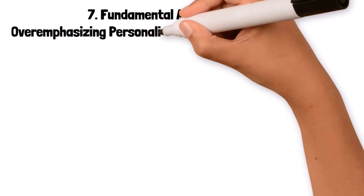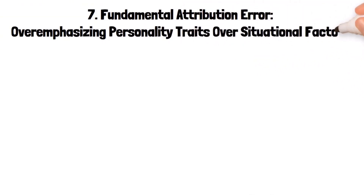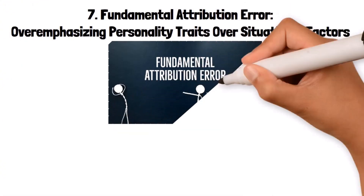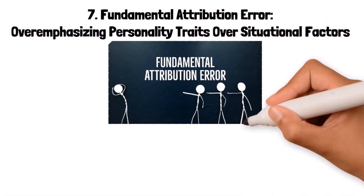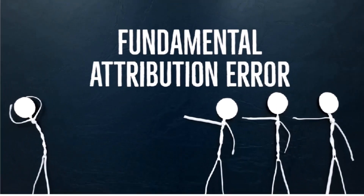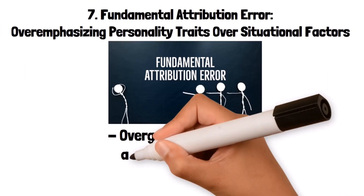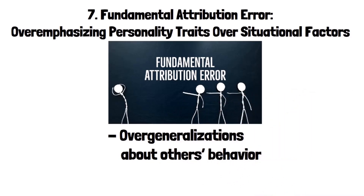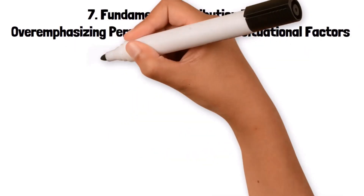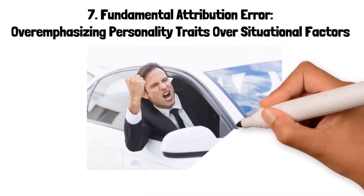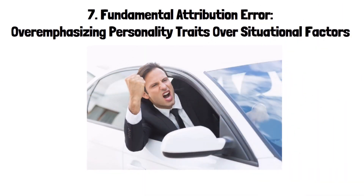7. Fundamental Attribution Error: over-emphasizing personality traits over situational factors. The fundamental attribution error is the tendency to attribute other people's actions to their character or personality while underestimating the influence of situational factors. This bias leads to over-generalizations about others' behavior. For example, if someone cuts you off in traffic, you might assume they are a rude or inconsiderate person rather than considering that they might be in a hurry due to an emergency.